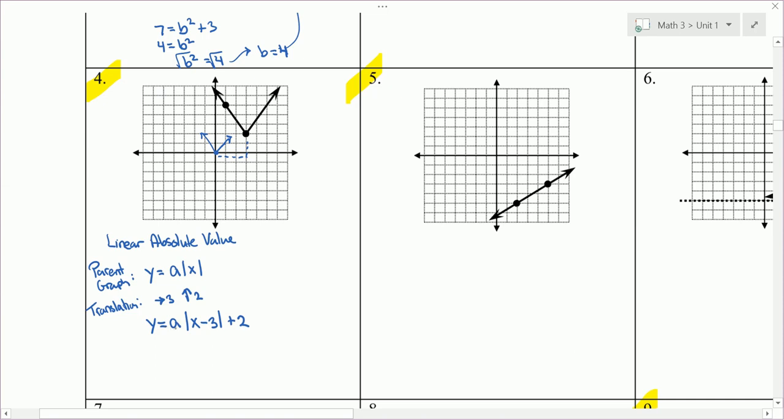The last thing we need to find is what is a. Pick a point that's not your vertex or where the parent graph point was. So we're going to use this point that they give us at 1, 5. Plug in 1 for x and 5 for y.